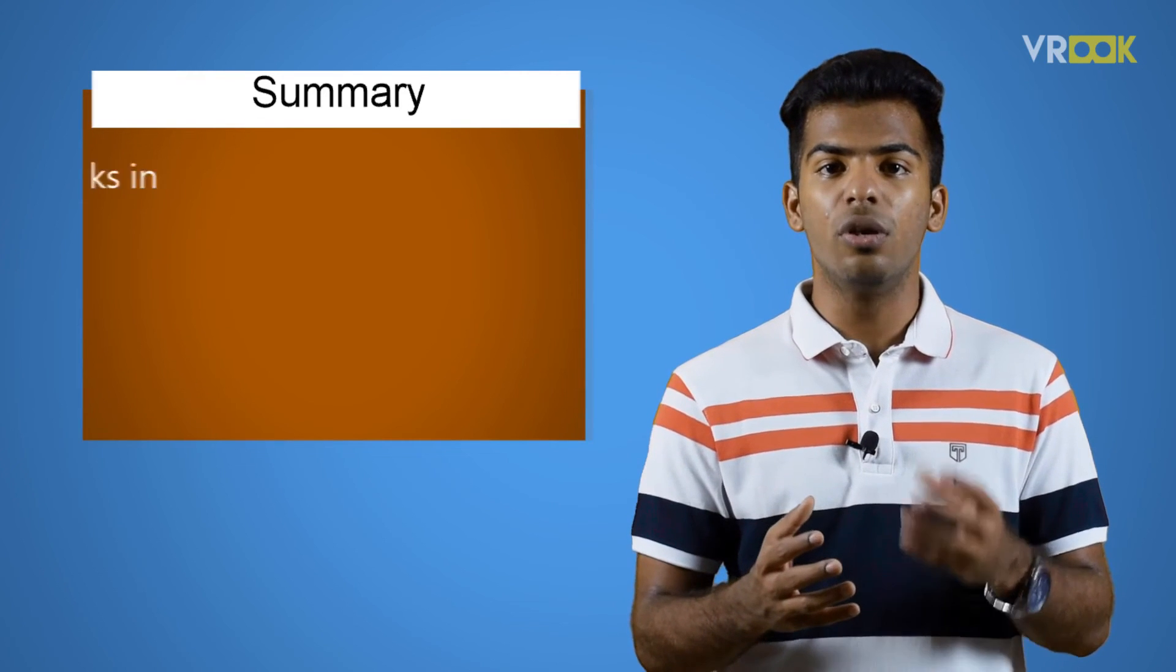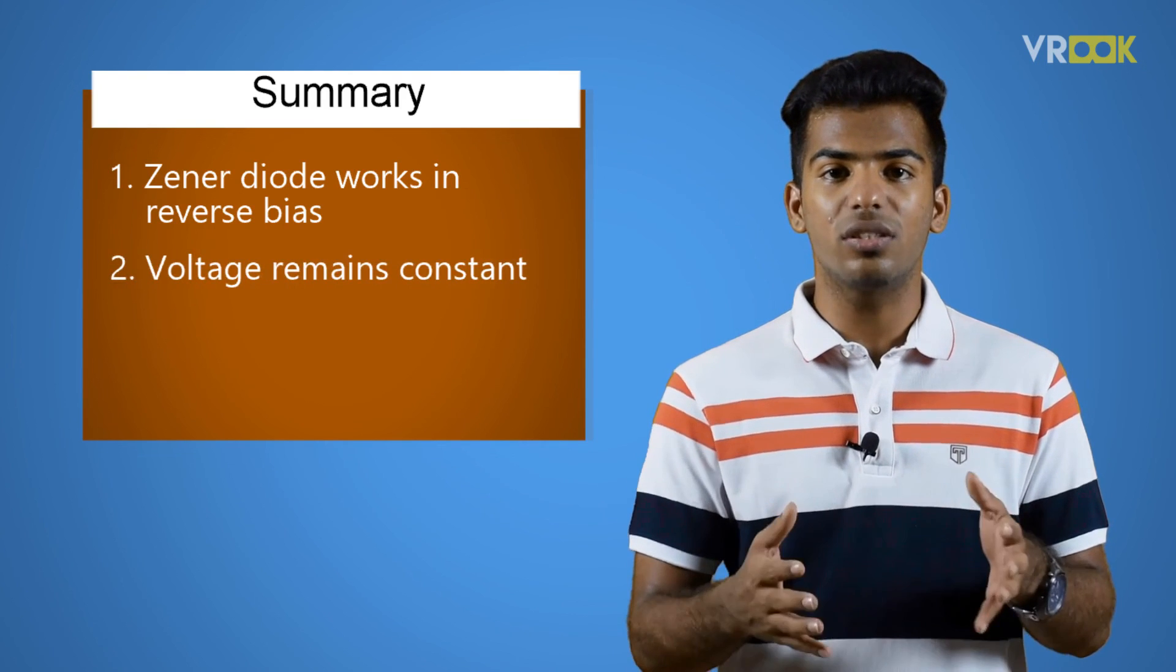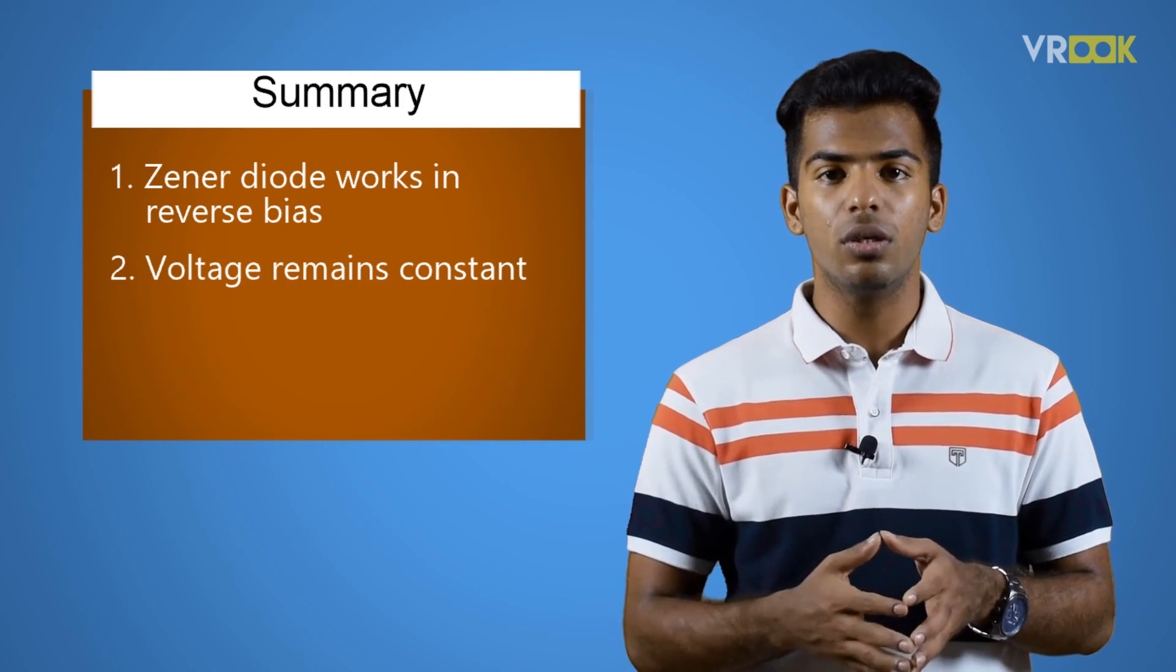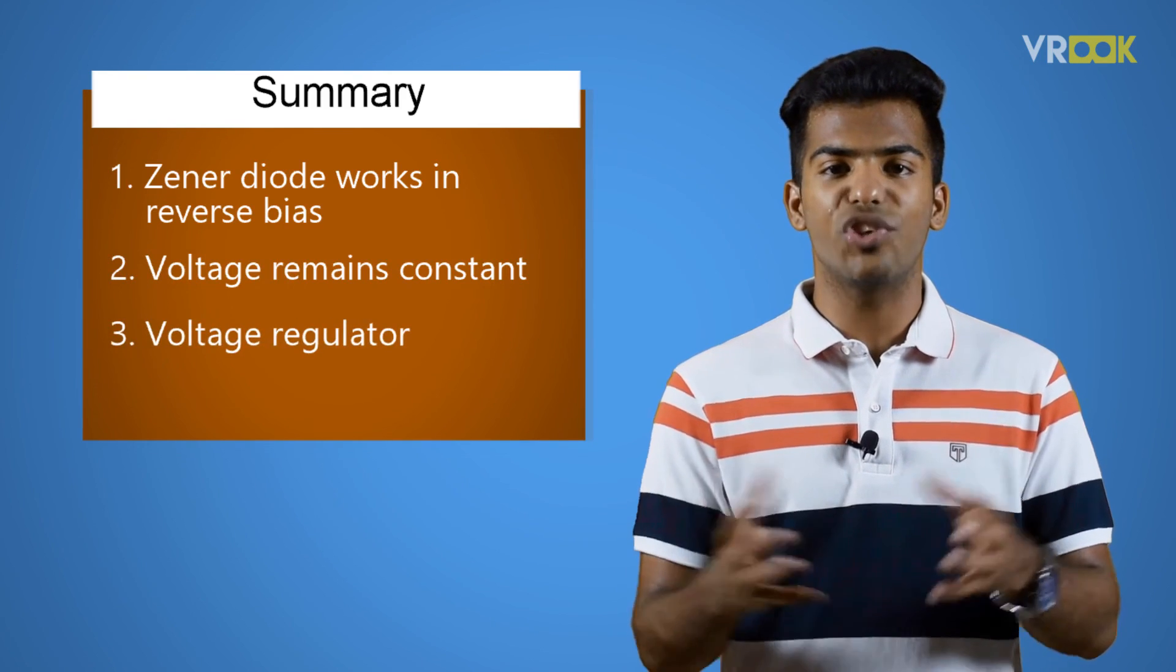This is all about Zener diode and its characteristics. To sum up, we learned about how Zener diode works in reverse bias. Then we saw the voltage remains constant in reverse bias mode. At last, we learned how it can be used as a voltage regulator. In the next video, we will look at rectifiers and learn about their applications. See you there.